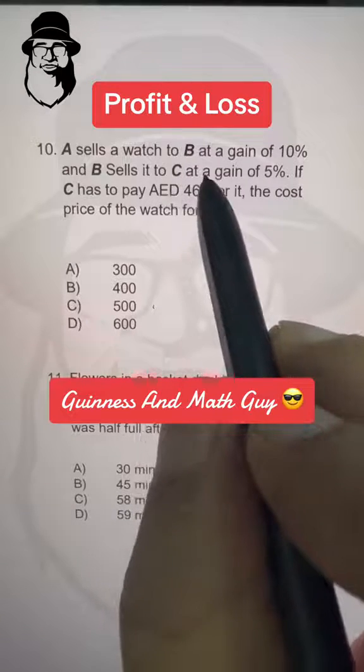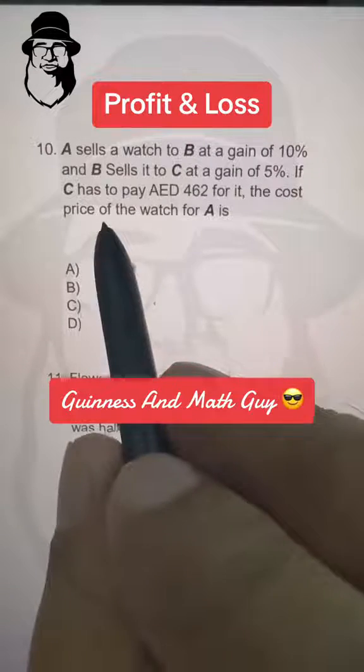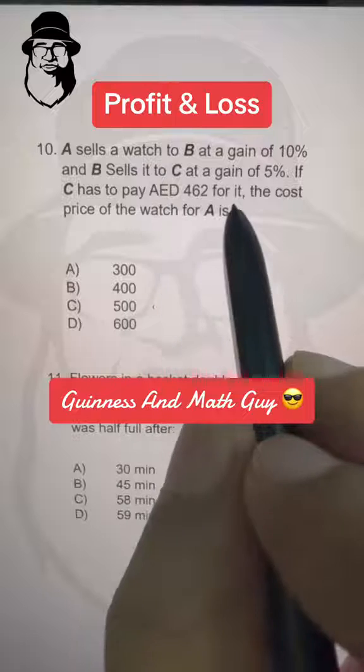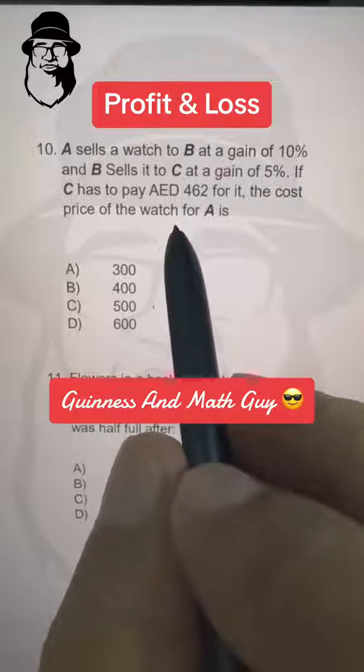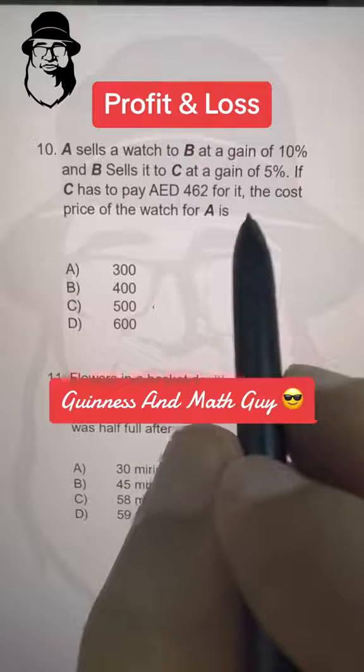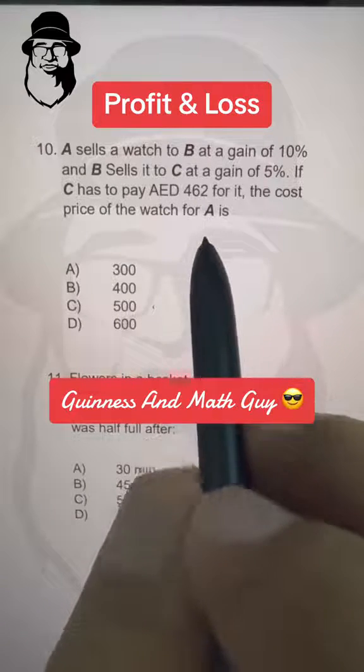A sells the watch to B at a gain of 10% and B sells it to C at a gain of 5%. If C has to pay AED 462 for it, the cost price of the watch for A is